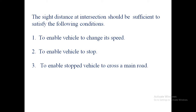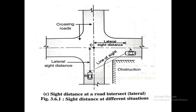Thus, the minimum sight distance to fulfill this condition is the distance travelled by a vehicle on the main road at design speed during time T. From safety considerations, the sight distance at an uncontrolled intersection should therefore fulfill all the above three conditions. The higher of the three values may be taken at unsignalized intersections at grade, except at rotaries.